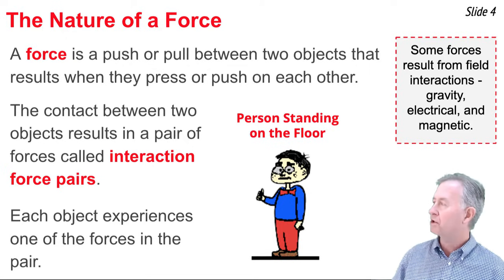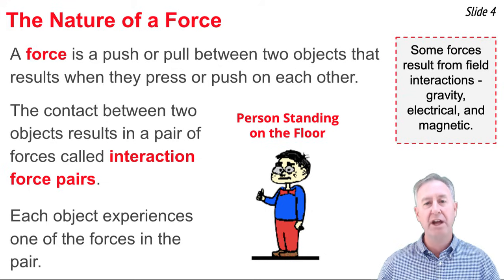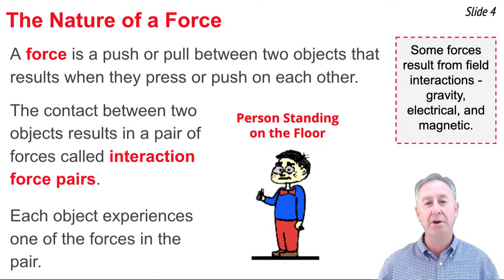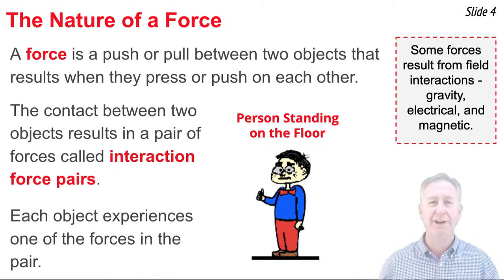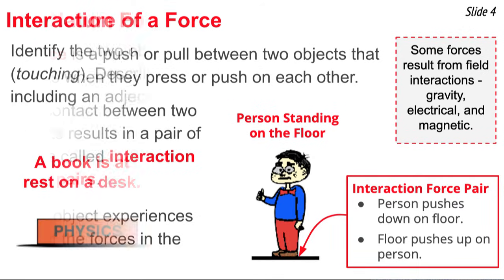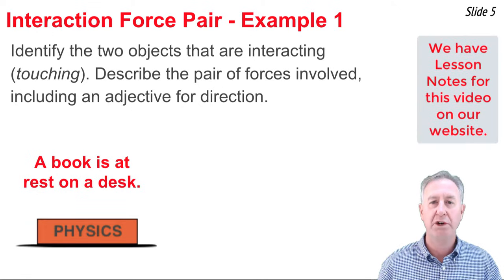For instance, if we have a person that stands on the floor, you want to be able to identify the two forces between the person and the floor. So first you have to identify the two objects — person and floor — and then you describe the forces. Use an adjective to describe the direction of those two forces. For instance here, we would say that the person pushes down on the floor and the floor pushes up on the person.